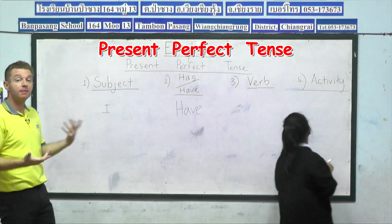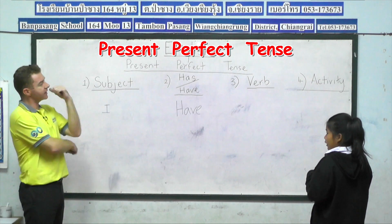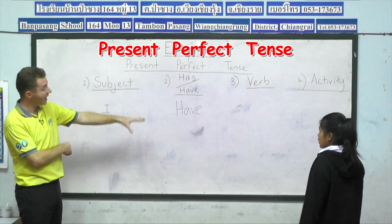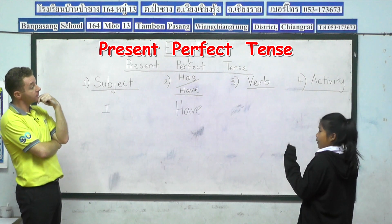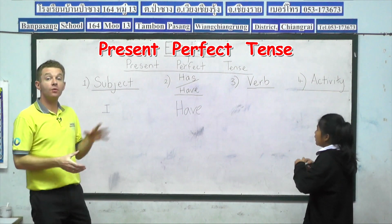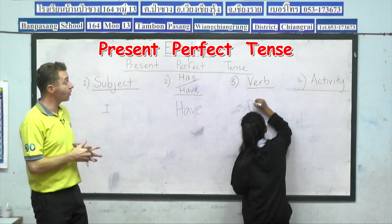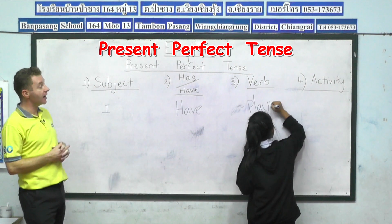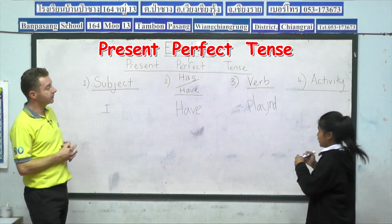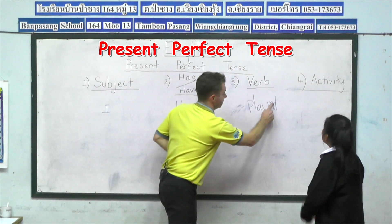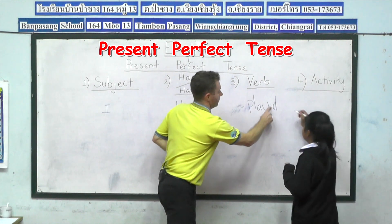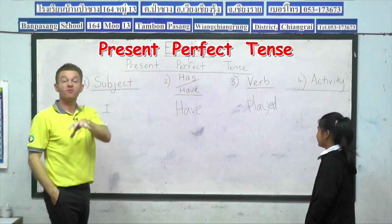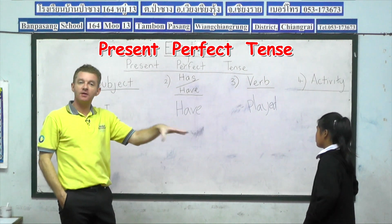Now we need to think about the rest of the sentence. Lackau, can you think of a verb word? What have you done? I have played. So Lackau will now write the next verb word in its past tense form: P-L-A-Y-E-D. Excellent Lackau. So you can see we've gone from play to the past tense version played.